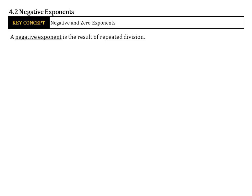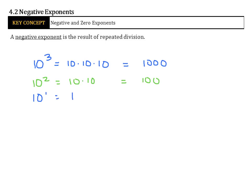We can look at a pattern of powers of 10. 10 to the third power is 10 times 10 times 10, which is 1,000. 10 to the second power is 10 times 10, which is 100 — our result is we lost a zero. So 10 to the first power is just 10. 10 to the zero power is just 1.